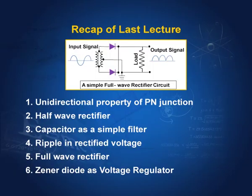In the last lecture, we learnt of a very important property of a PN junction — it acts only in one direction, that is, it has a unidirectional property, and this property is made use of in rectifying AC voltage to DC voltage. We can have a half wave rectifier or a full wave rectifier, and the rectified voltage has to be passed through a filter so that it attains a steady value, but even after the filter a ripple component is left. At the end of the last lecture, we studied the Zener diode and found the way to make it act as a voltage regulator. Today, we continue with examples which explain the various concepts learnt so far in this chapter.